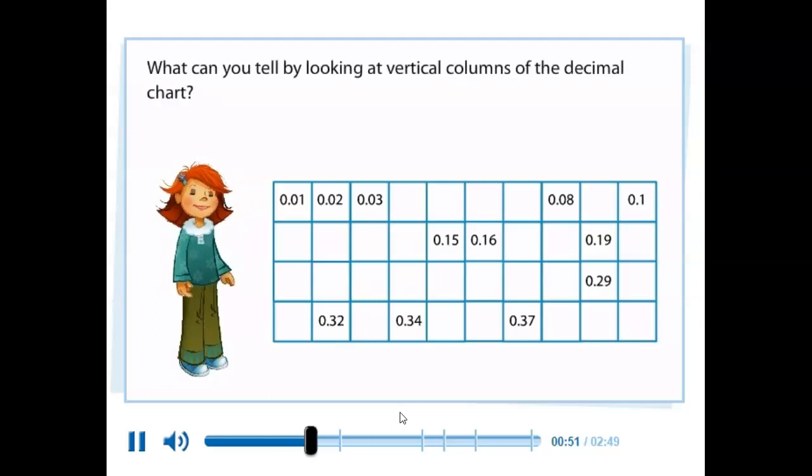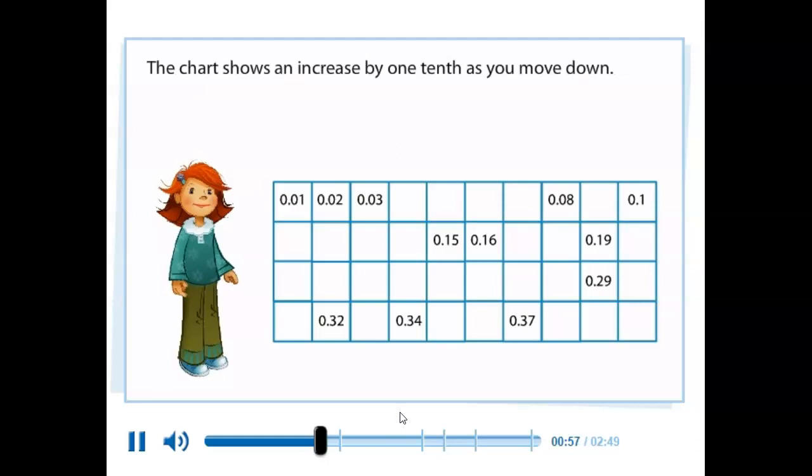What can you tell by looking at vertical columns of the decimal chart? The chart shows an increase by one-tenth as you move down.